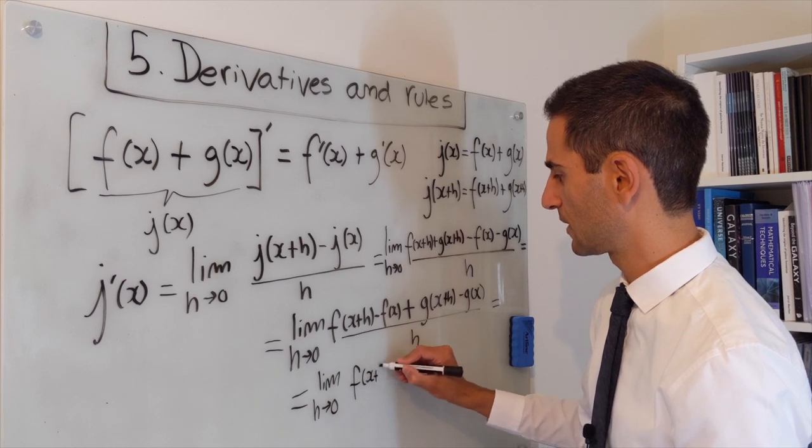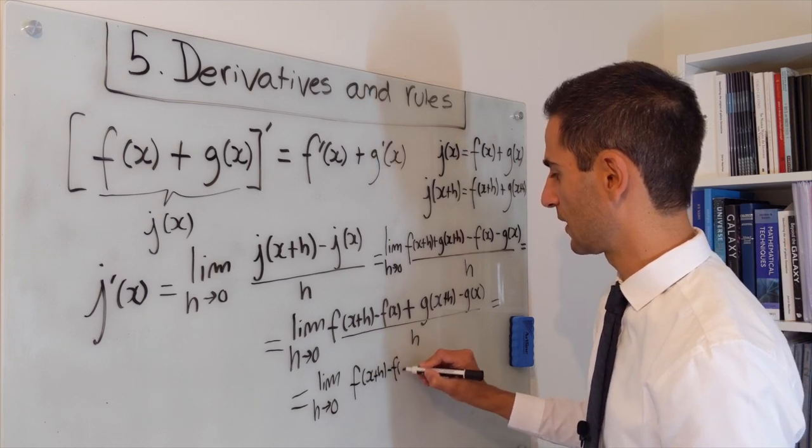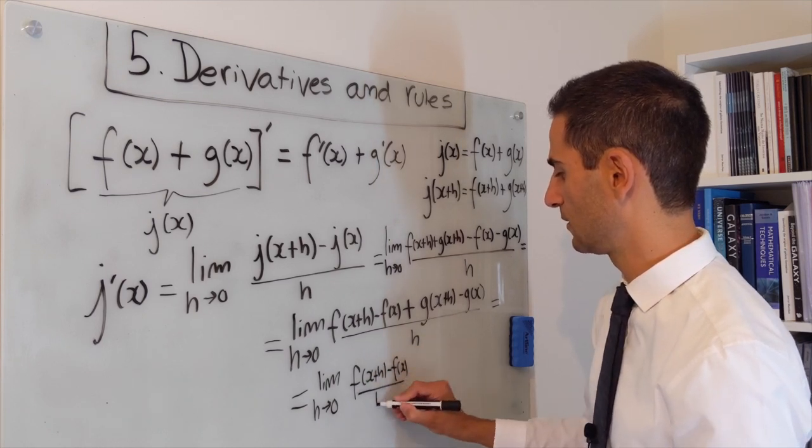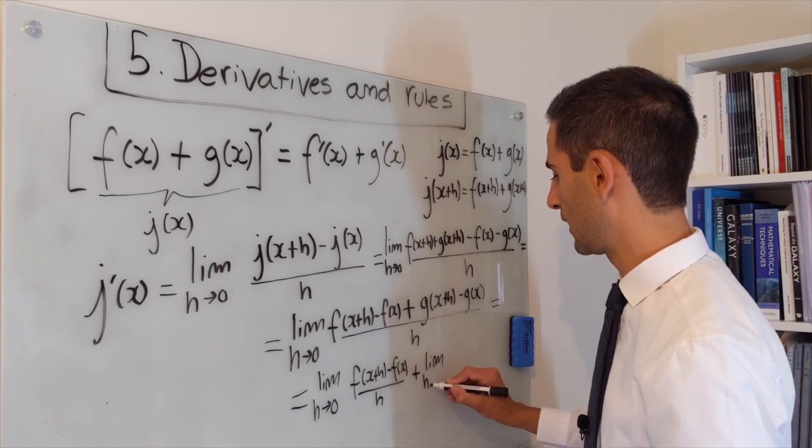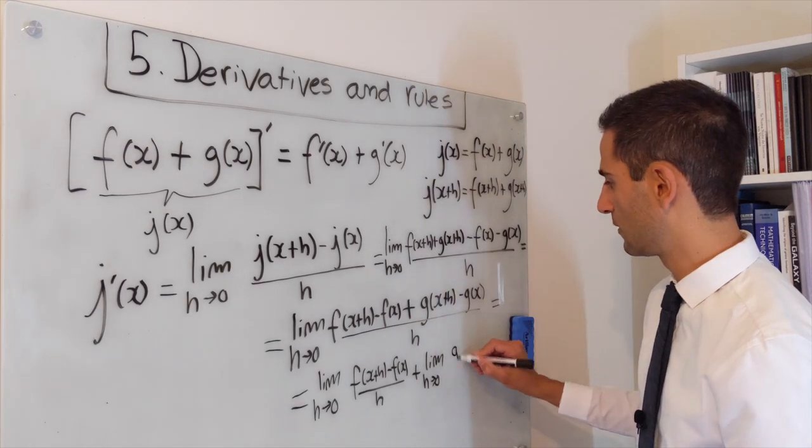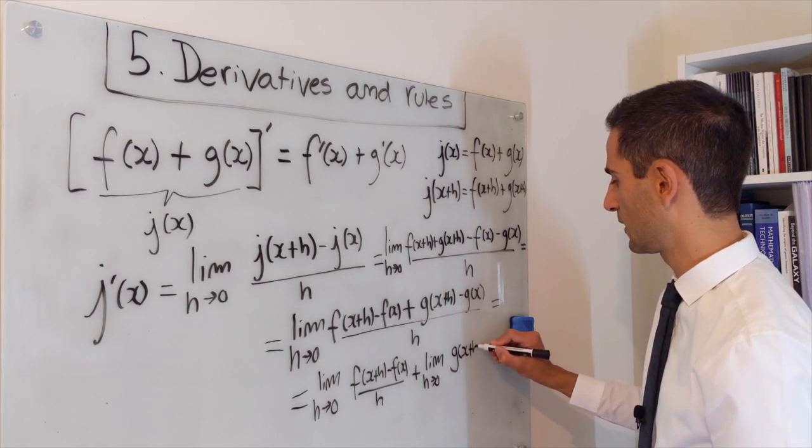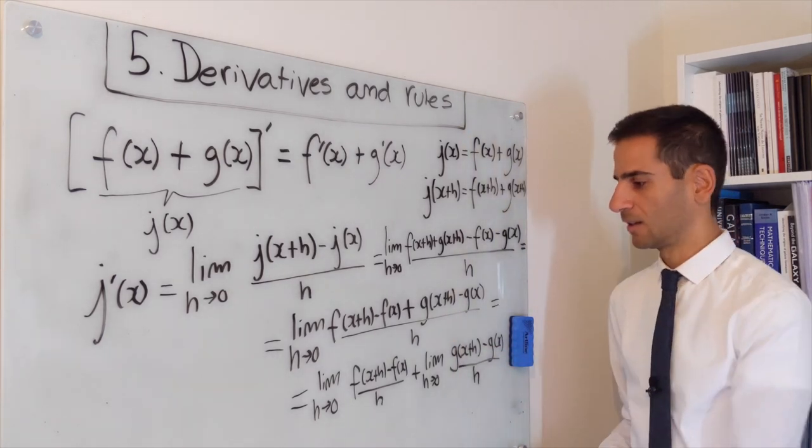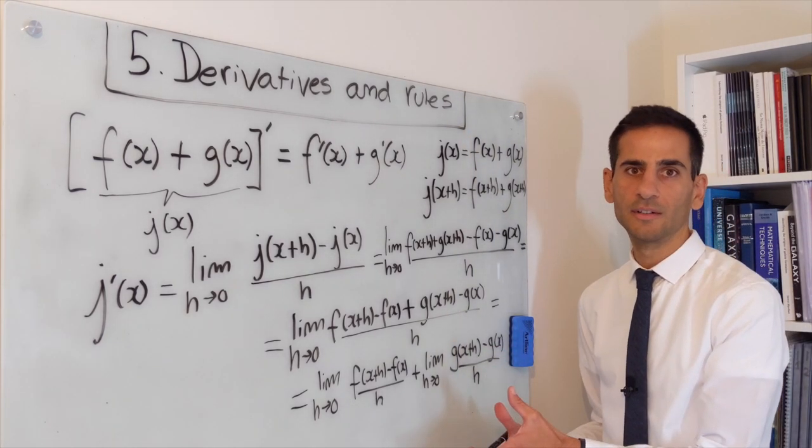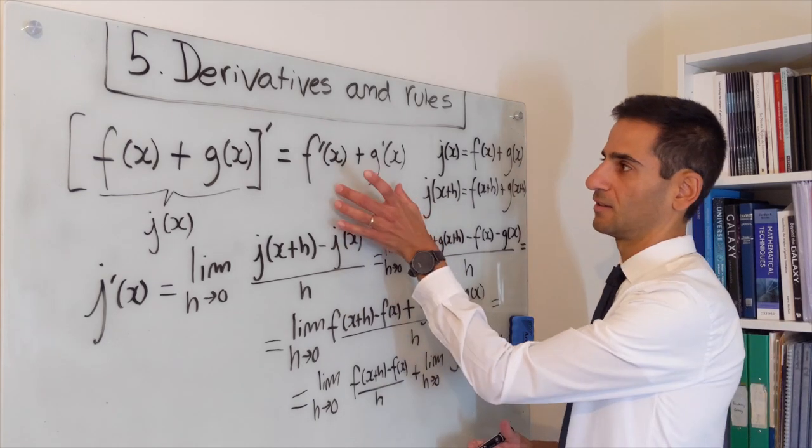And we can write it as limit when h goes to zero of f of x plus h minus f of x divided by h plus the limit when h goes to zero of g of x plus h minus g of x divided by h. And the final part of demonstrating that this is true is to identify this and identify this.